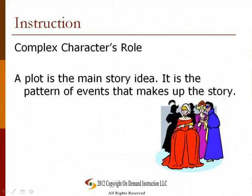A plot is the main story idea — it is the pattern of events that makes up the story. The decisions of a complex character will generally advance the plot, and the conflict they face creates new plot progress that leads to a resolution. The theme is the moral of the story; it is what the story is trying to tell you, the point it is trying to make. A complex character also affects the theme with its conflicts and decisions. A poor decision, like one to steal or kill, may make for a cautionary theme, while a good choice, such as helping another or being honest, will generate a happier or more upbeat theme.